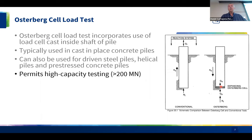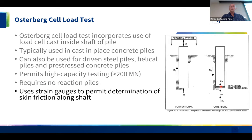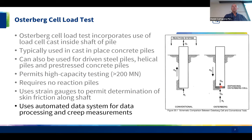We always instrument the pile not only with the O-cell but also with strain gauges along the shaft, which allows us to determine the shaft friction at different depths. The O-cell also utilizes an automated system for collecting data during the test itself, giving real-time results.